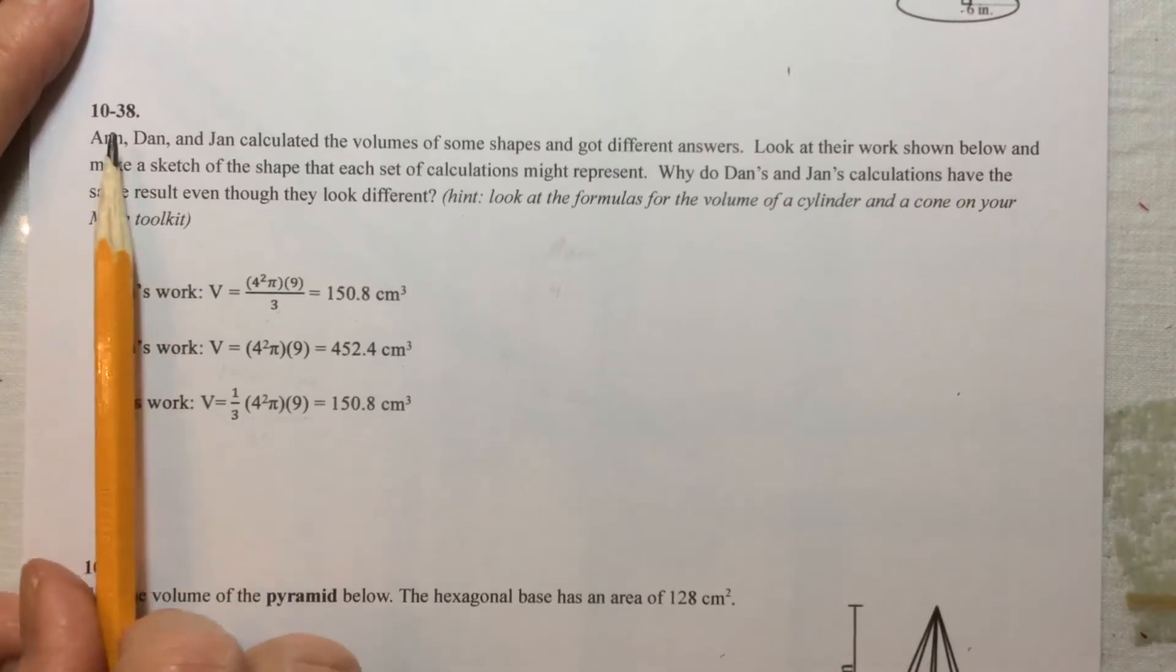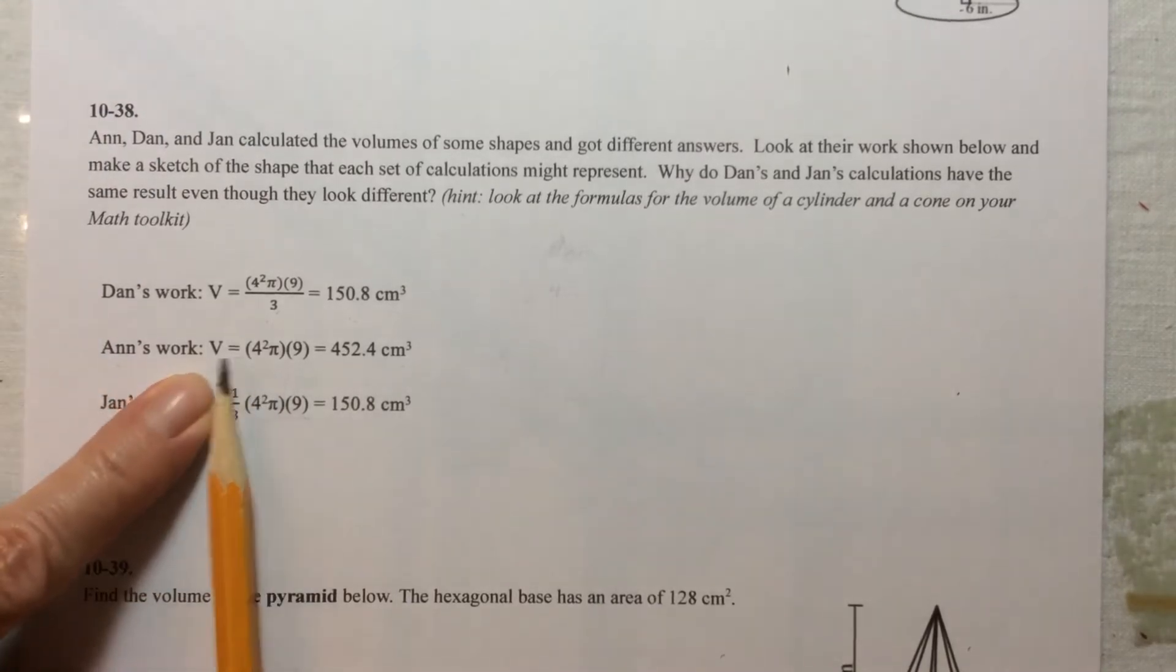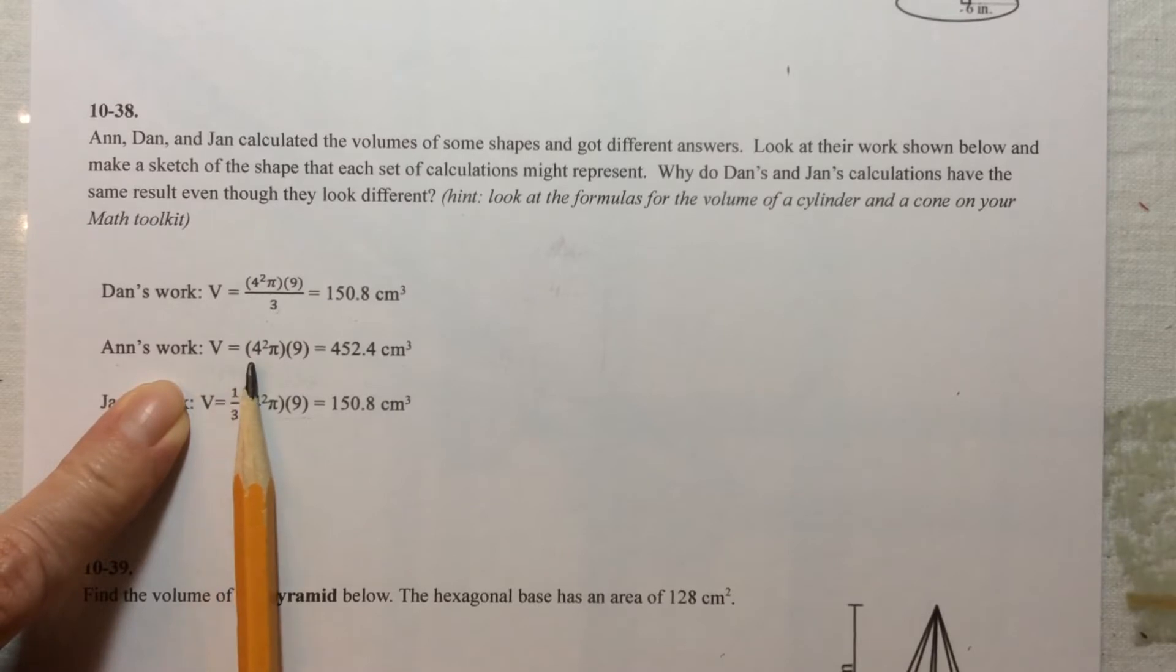All right we're still on 10-38 and the first one of these calculations that we're going to look at is Ann. So Ann has a calculation where it says the volume is equal to four squared times pi times nine.